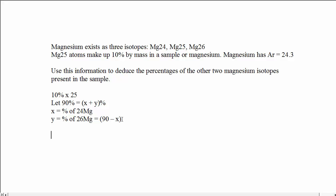So what have we got? We've got the relative atomic mass, 24.3 equals 24x plus 250, because that's 10 times 25, plus